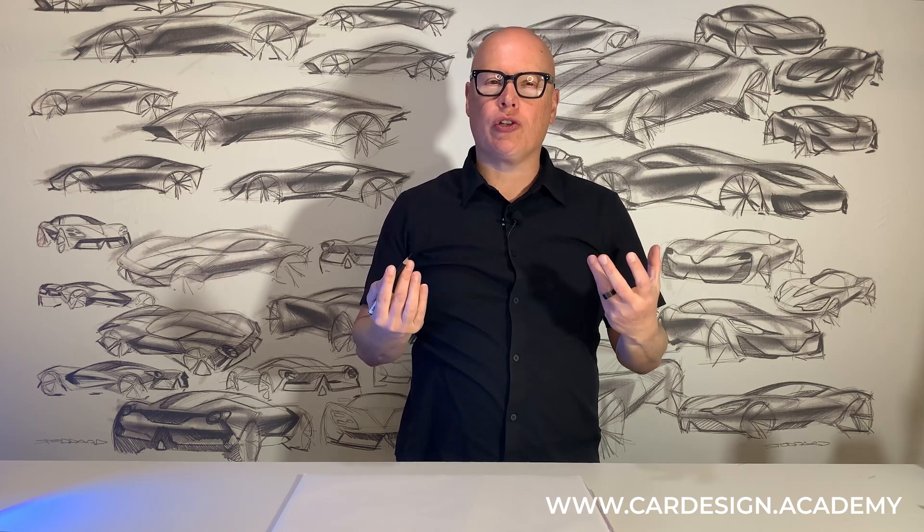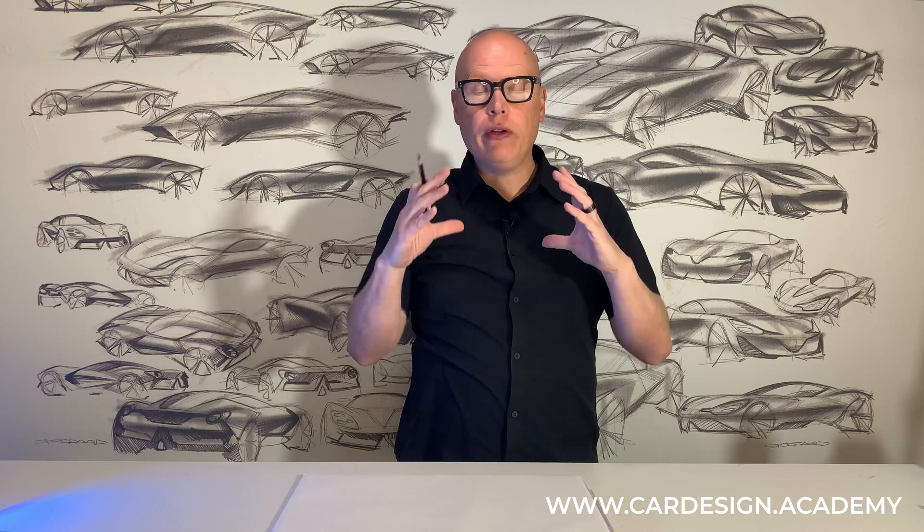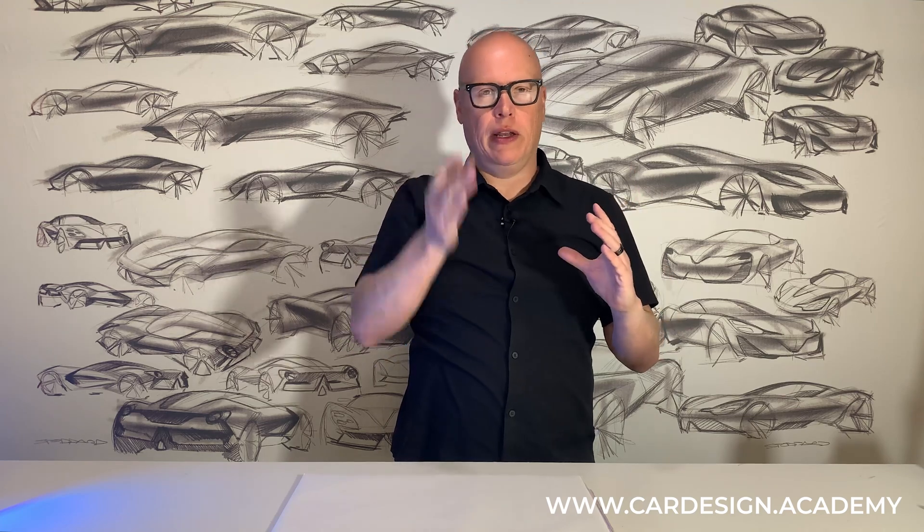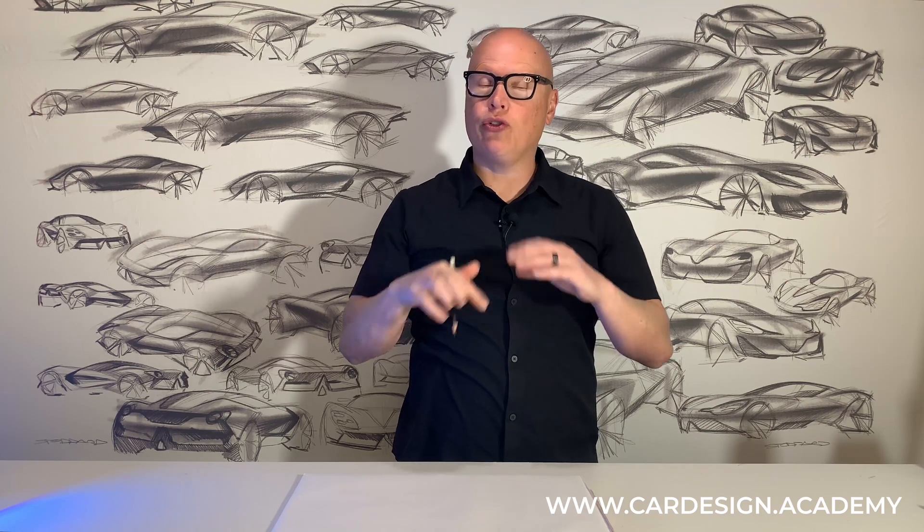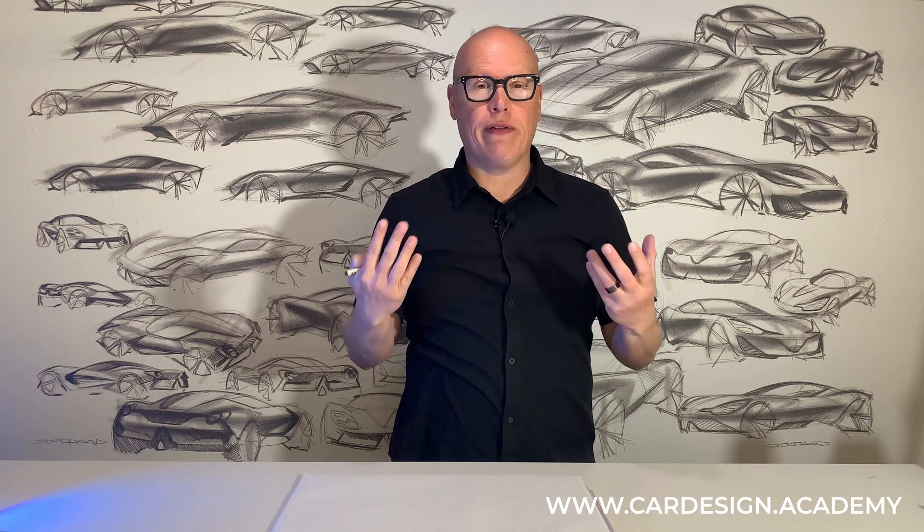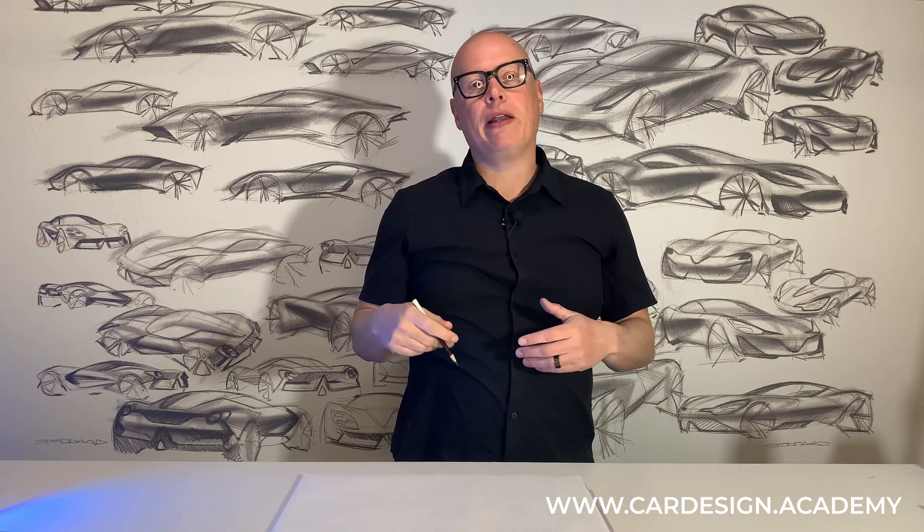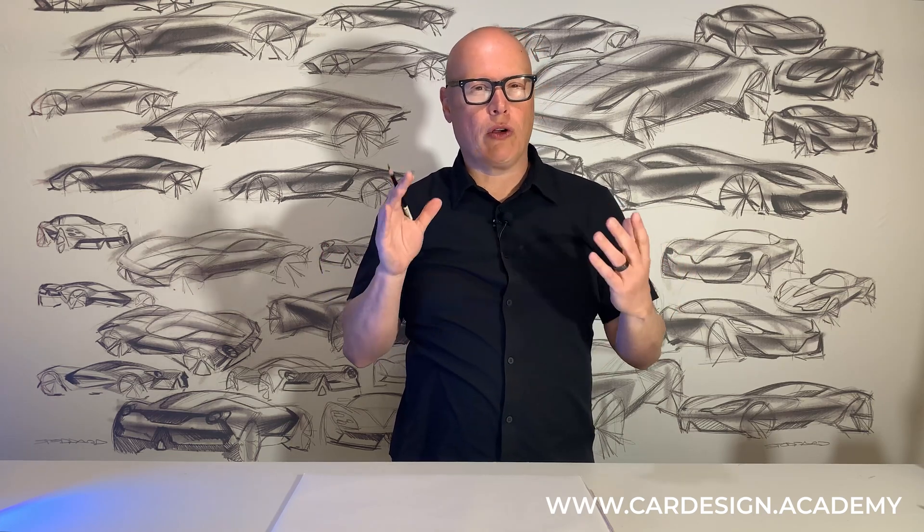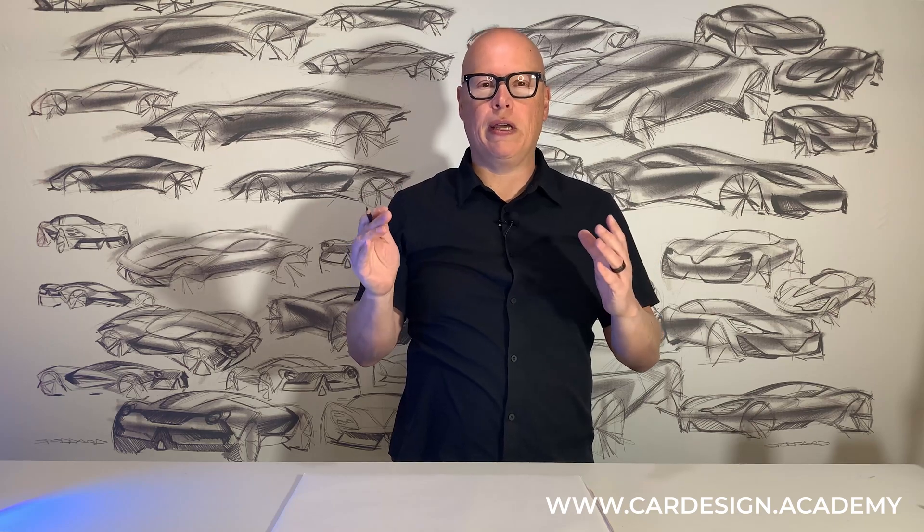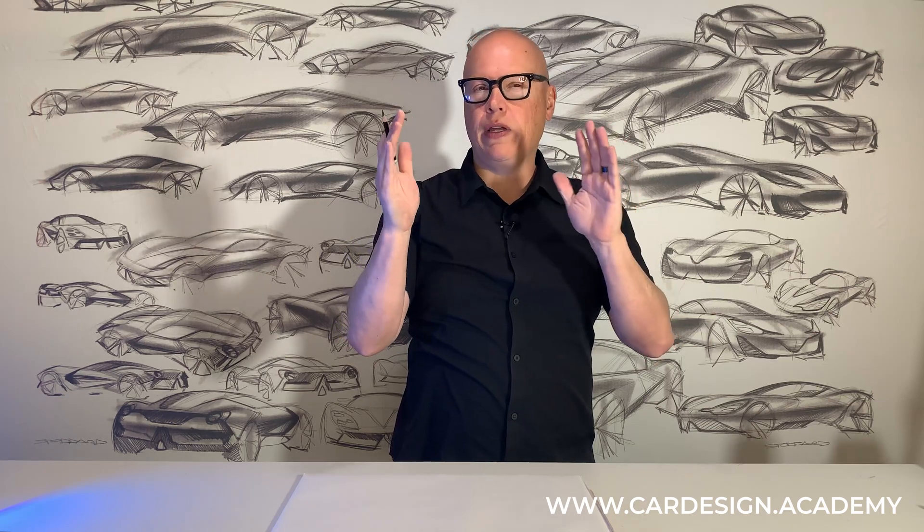Now if you remember at the beginning of the course we started by drawing circles. Circles are round, they're equal sized in every direction, and that's because cars have wheels and wheels are round. When we draw cars in side view we have round wheels. But the reason we draw ellipses is because when we draw cars in perspective, that circle becomes foreshortened.